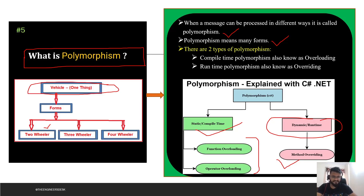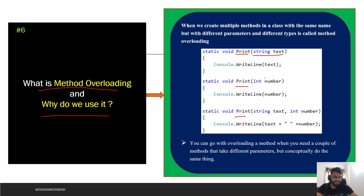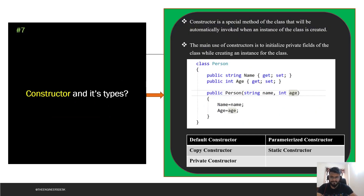The next question is: what is method overloading and why do we use it? When we want to create multiple methods in a class with the same name but with different parameters, that is method overloading. For example, if you have methods all named 'print' but one takes a string, one takes an integer, and one takes a string and integer together — the behavior can be different but the name stays the same.